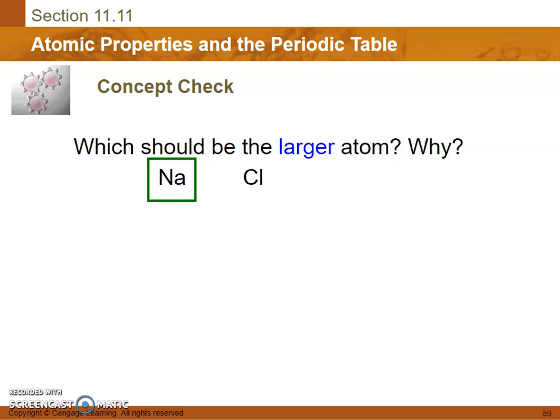Which should have a larger atom? Sodium. Why? Because it has fewer protons, so it doesn't have as good of a hold on its electrons than chlorine. Chlorine holds very tightly to its electrons. It wants to keep them. It does not want to give them away.